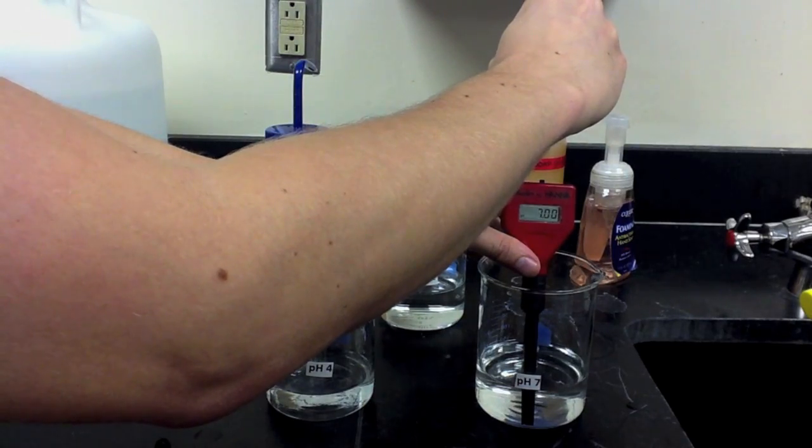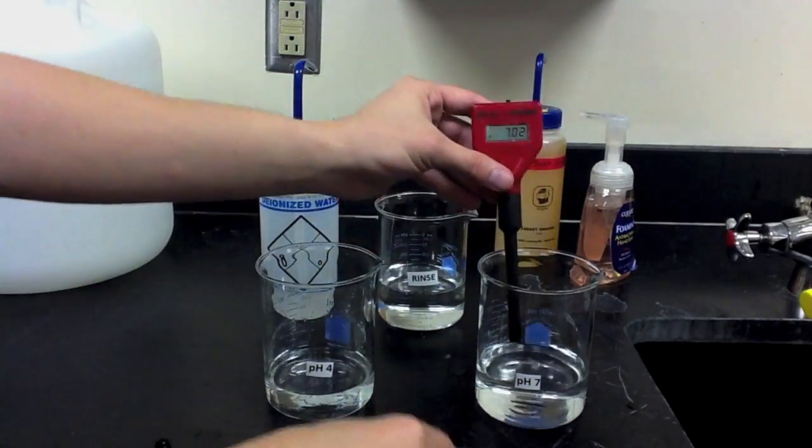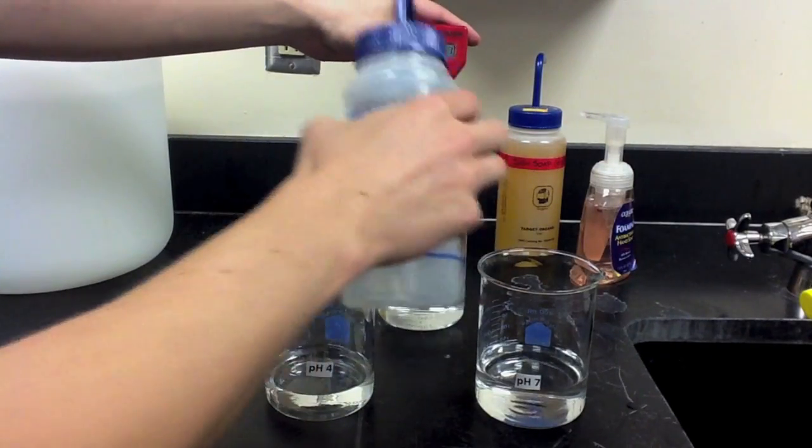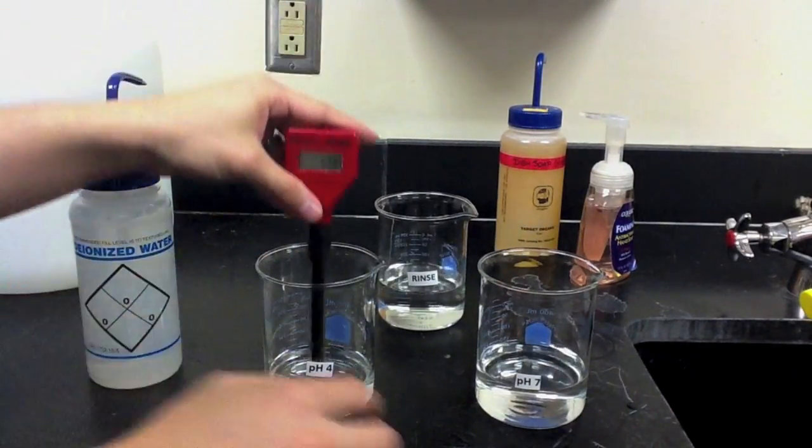Once we achieve a pH of 7, we're going to rinse the electrode and after rinsing, we can then place the pH meter into the pH 4 buffer.